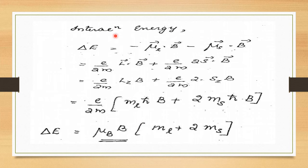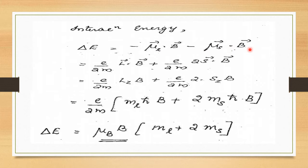The interaction energy Δ is obtained by splitting μL and μS separately: ΔE = −μL·B − μS·B. Substituting μL and μS, this equals (e/2m) L·B + (e/2m) 2S·B.